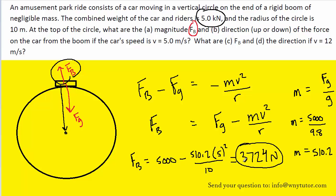We can now move on to parts C and D and this won't be too much more complicated because we already have the expression for the boom force. So all we have to do is substitute in a new value for the velocity V and see what the magnitude and direction of the boom force turns out to be. So let's go ahead and do that.